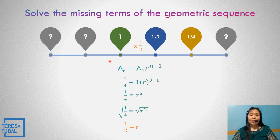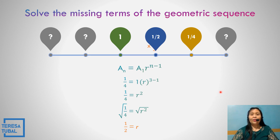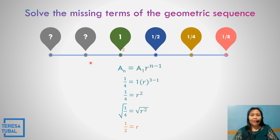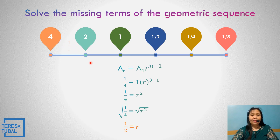So multiply by the common ratio. 1 times 1 half is 1 half. 1 half times 1 half is 1 fourth. And 1 fourth times 1 half is 1 over 8. Going to the left, that means divide by 1 half. So 1 divided by 1 half is 2. 2 divided by 1 half is equal to 4.